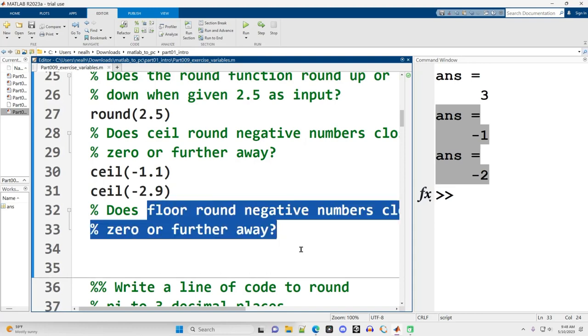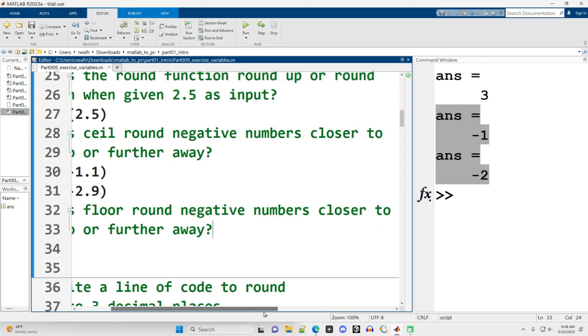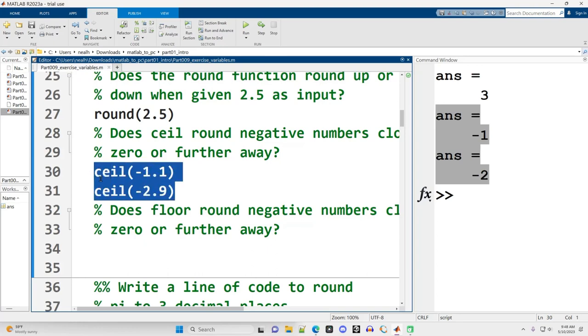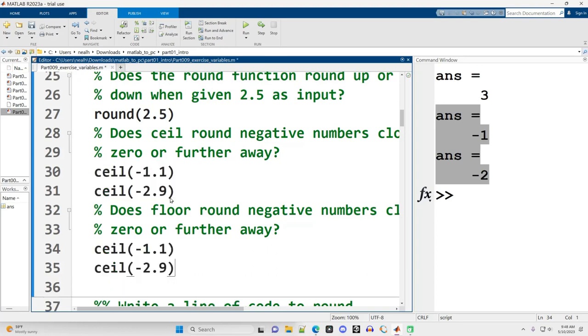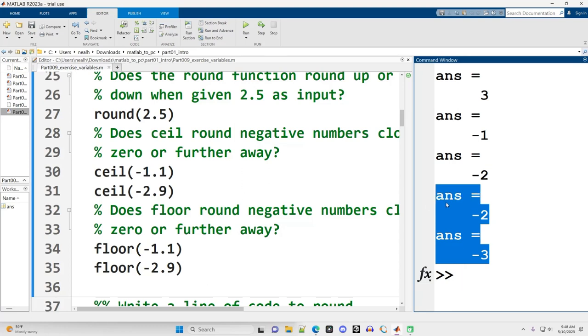Does floor round negative numbers closer to zero or further away? The question is slightly cut off. And what we can do is we can copy this down and just change it to floor. I just double click on the word and it selects the whole word, or I can use ctrl shift and then an arrow key to just grab the whole word. And as we can see here, with those last two results, floor is going to round negative numbers further away from zero. Again, if we imagine that vertical number line, floor rounds down that vertical number line.